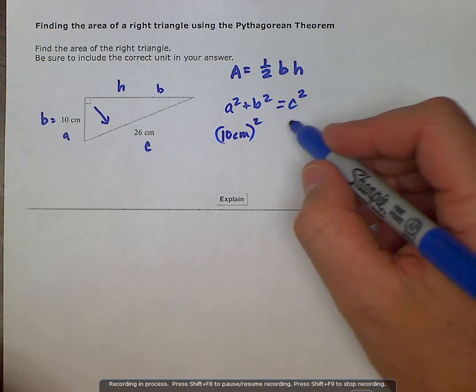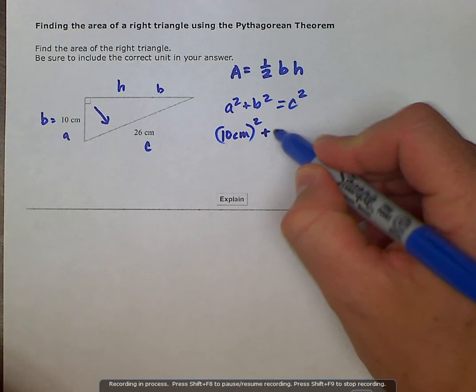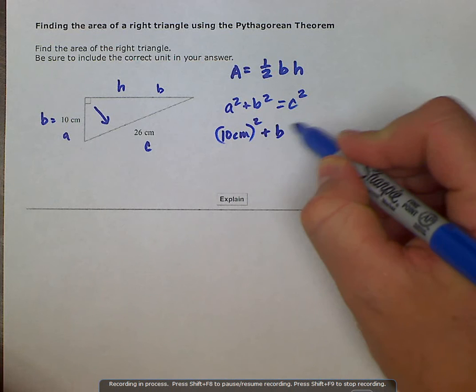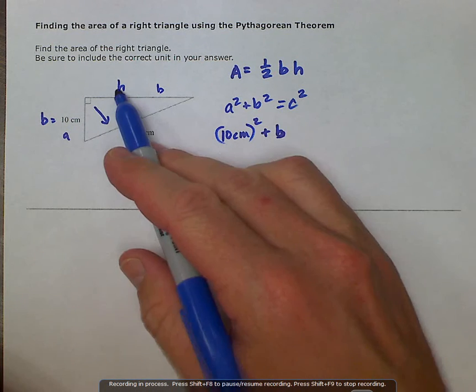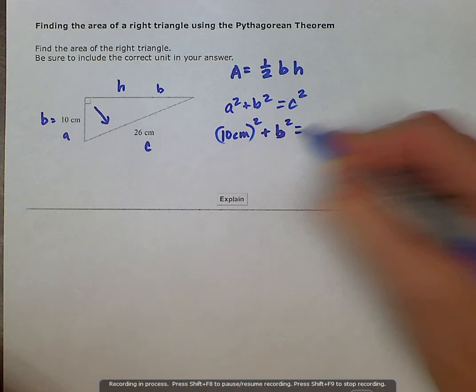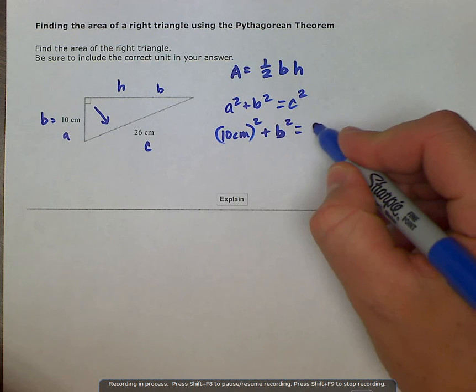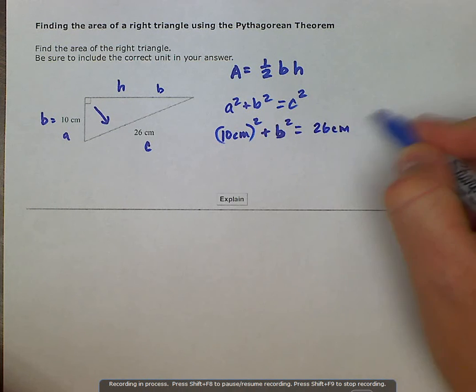And then we have our base, which is our unknown, or excuse me, our height, which we'll label b, squared, as equal to c squared, which is 26 centimeters, and we're going to square that.